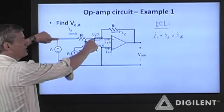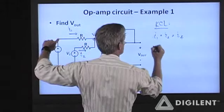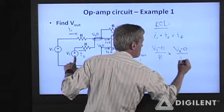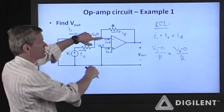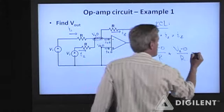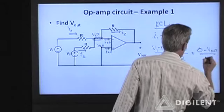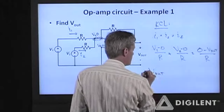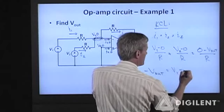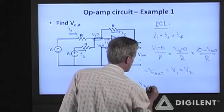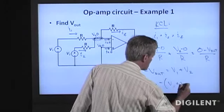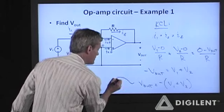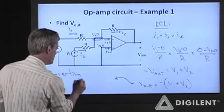I1 is V1 minus 0 over R, and I2 is V2 minus 0 over R. That equals the feedback current, which is 0 minus Vout over R. Multiplying through by R and simplifying, Vout equals negative V1 plus V2. This circuit sums the inputs and then inverts that sum, so it is called an inverting summing circuit.